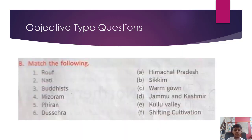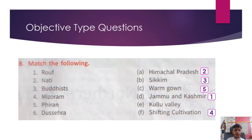B. Match the following. Rauf — Jammu and Kashmir. Nati — Himachal Pradesh. Buddhists — Sikkim. Jhum (shifting cultivation) — Meghalaya. Pheran (warm gown) — Kashmir. Dussehra — Kullu Valley.